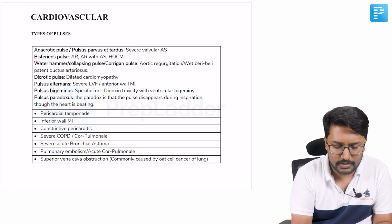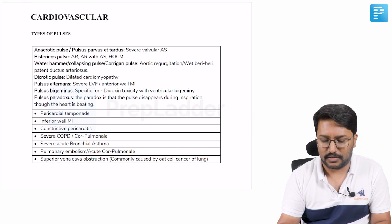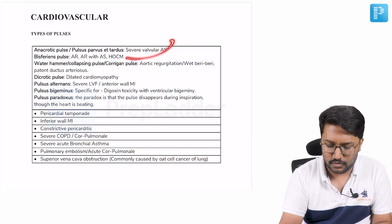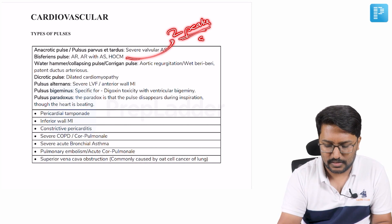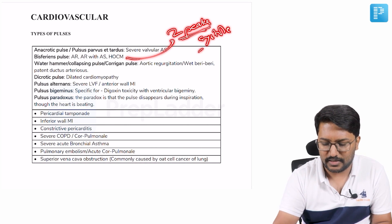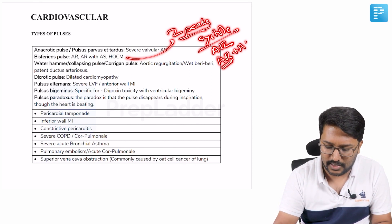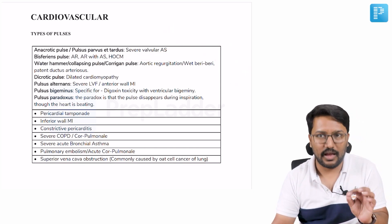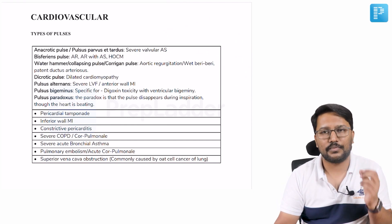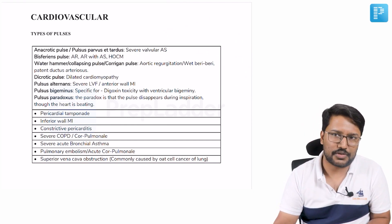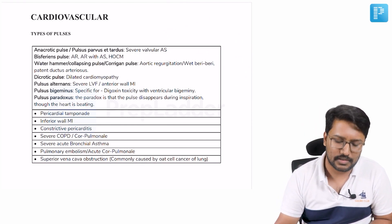Similarly, we have this pulse called bisferiens pulse, where there are two peaks in systole. Where do you see that? We see that in patients with AR, predominant AR plus an added AS, and we can also see that in patients with HOCM. AR is the main thing to remember here: AR, AR with AS, or HOCM. That is where we will be seeing the bisferiens pulse.